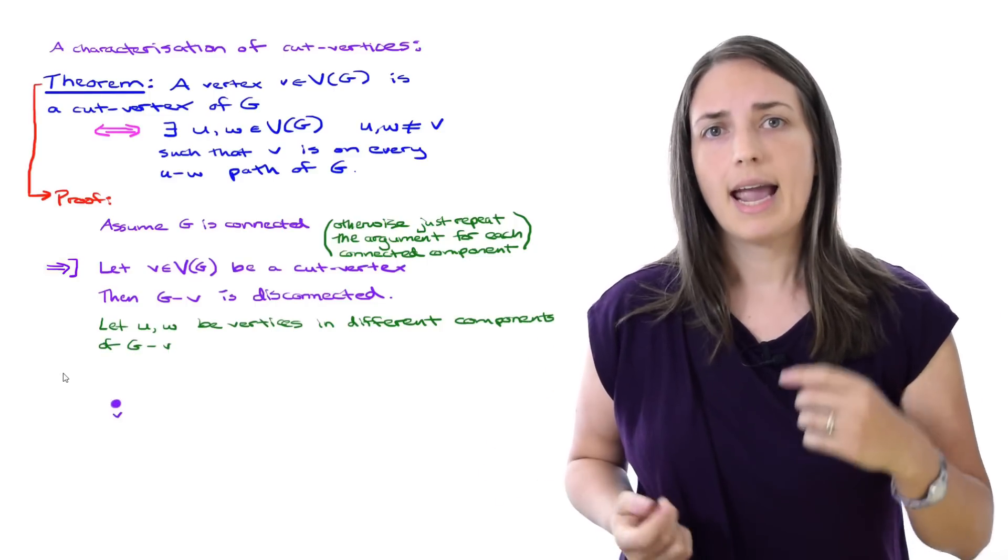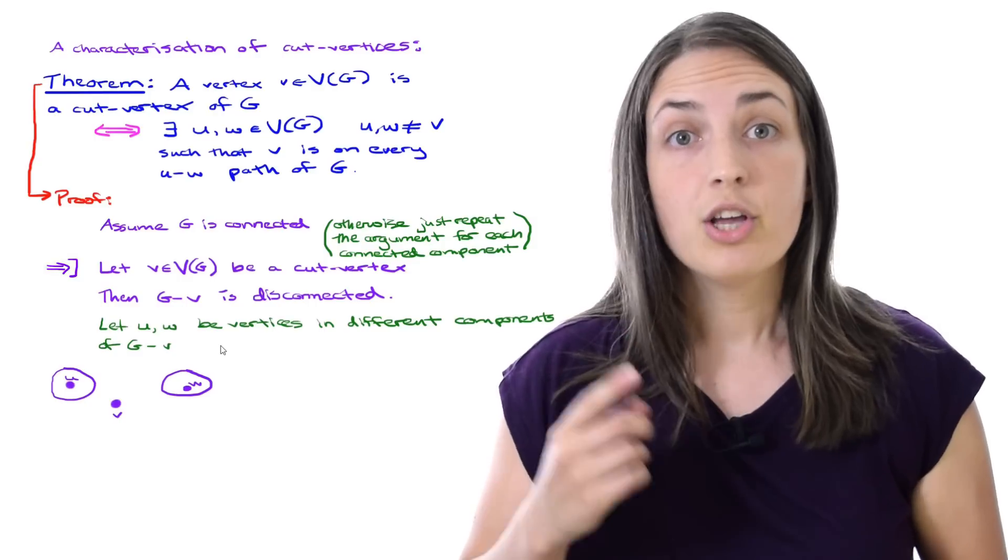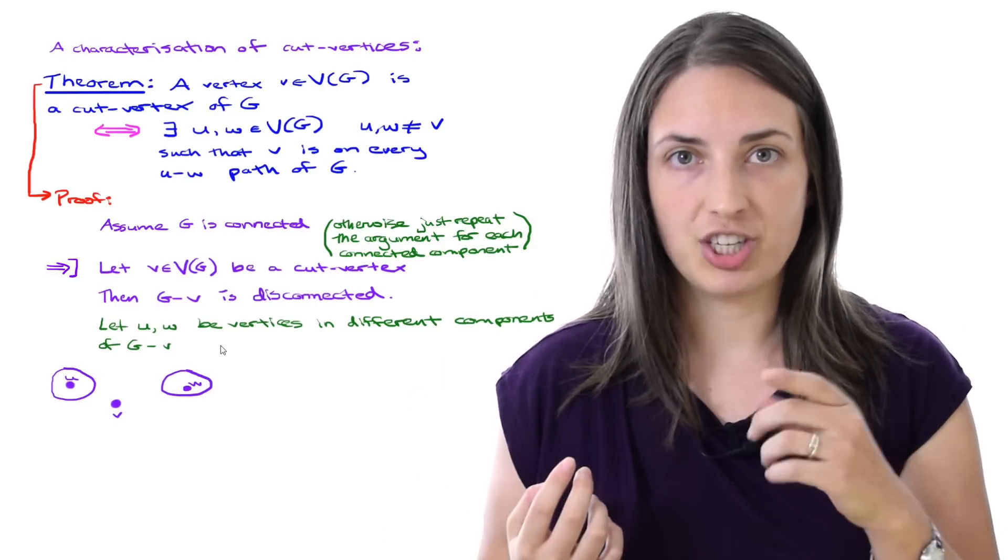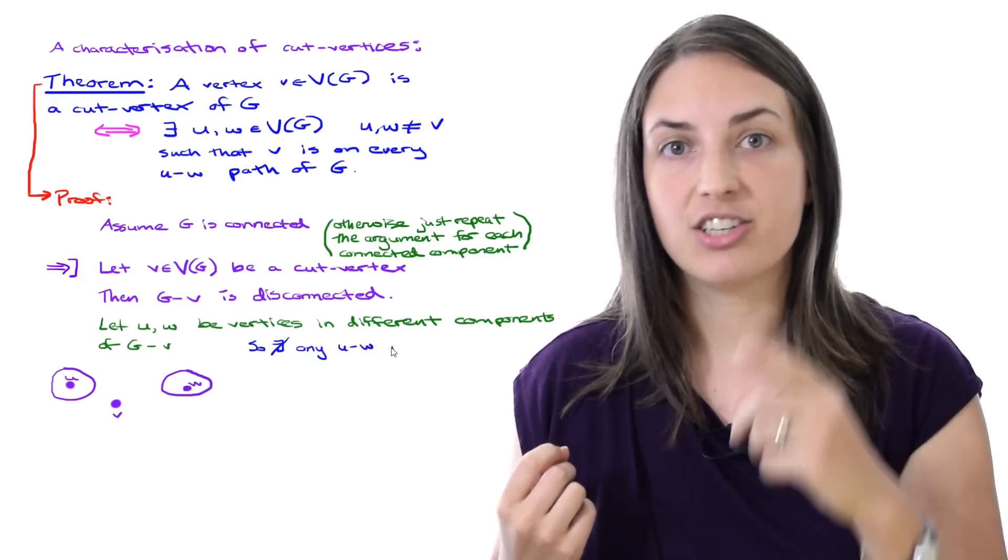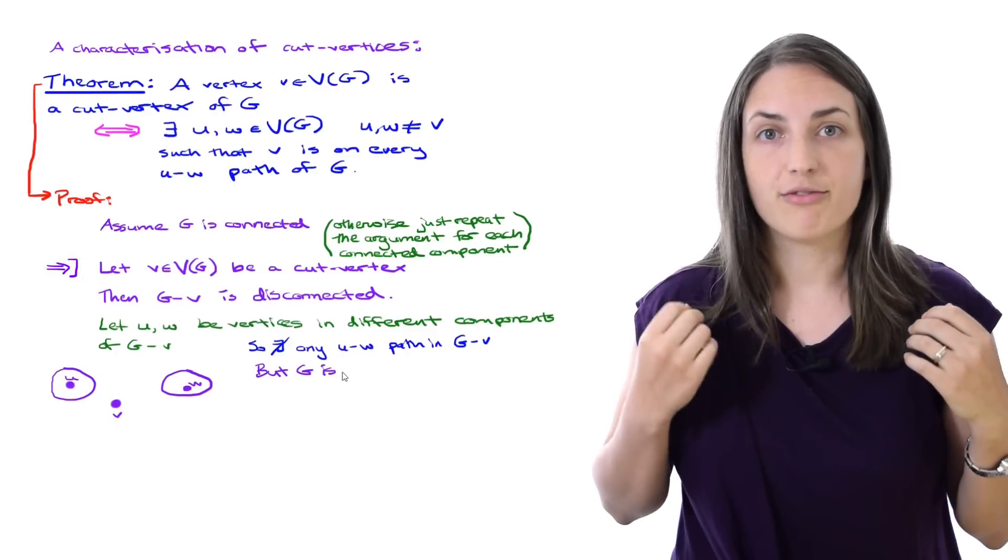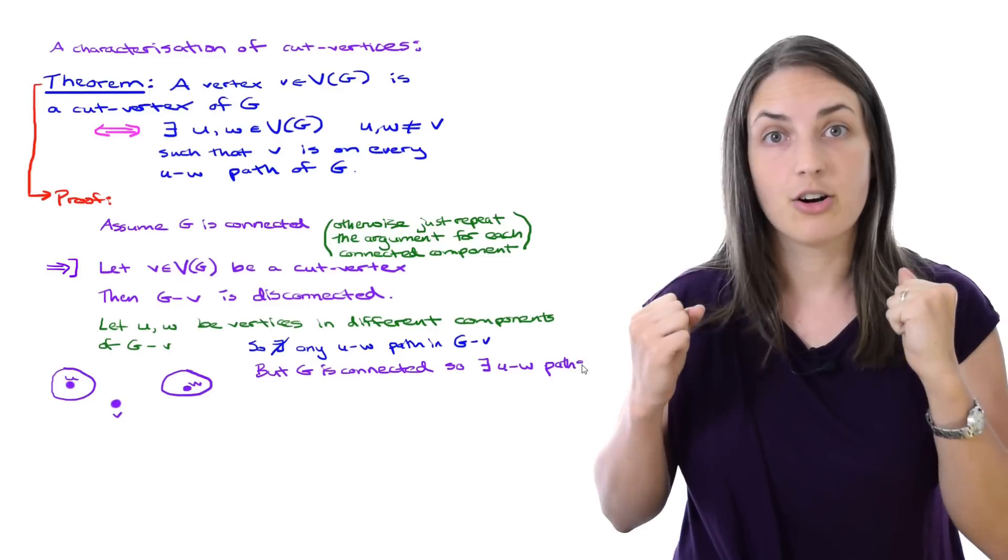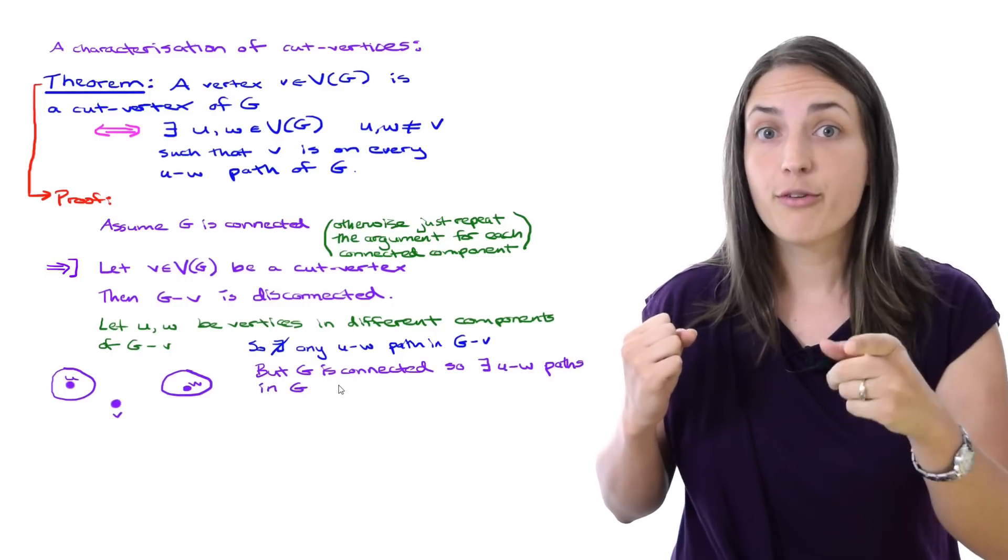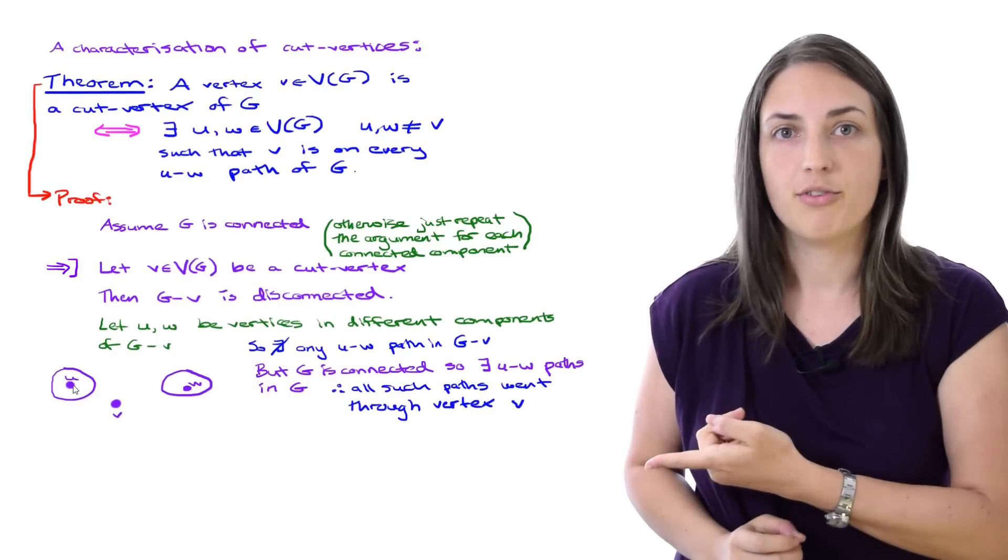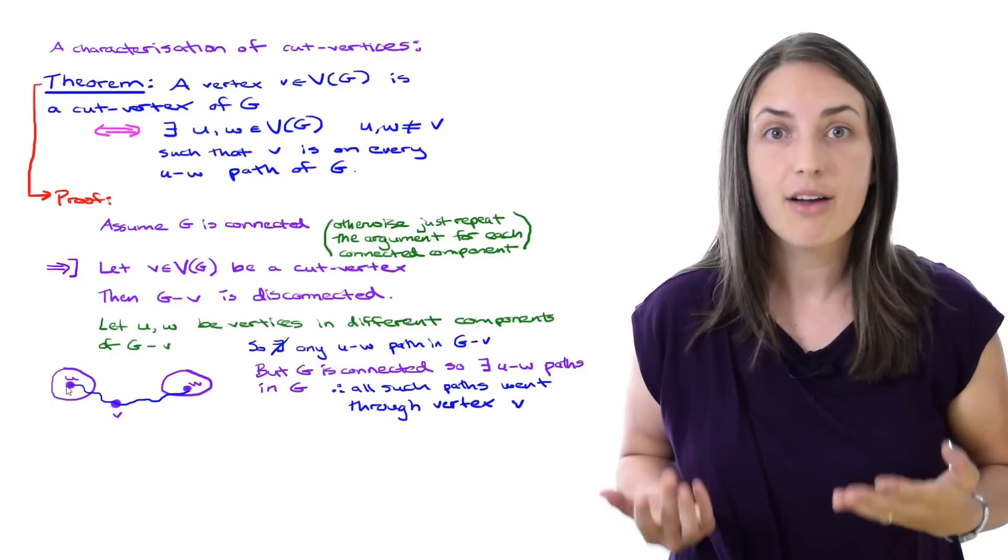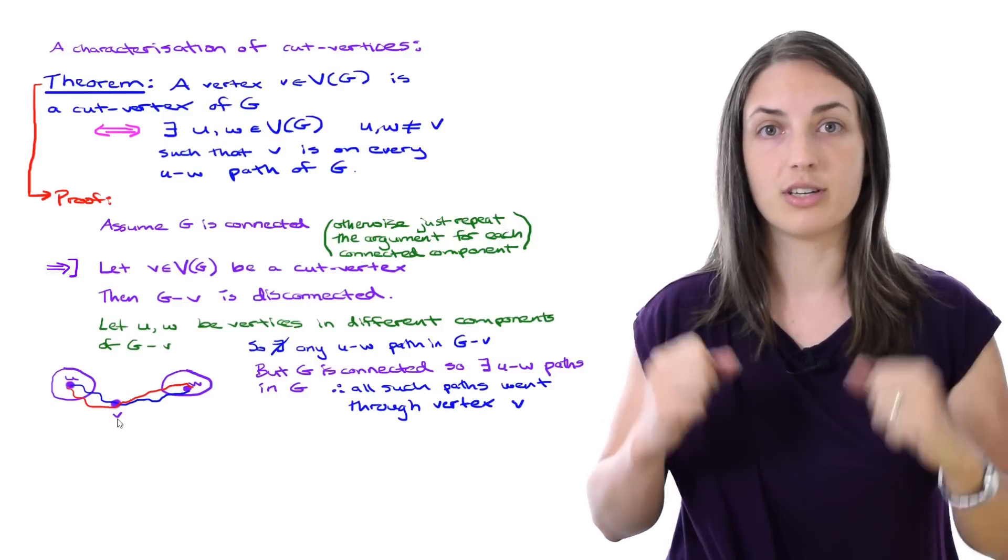Let's start drawing what we know. We have our vertex V and then we have at least two components and we'll put U in one of them and W in the other. Now U and W being in different components of G without V means that there cannot exist any U, W paths in G minus V, but our graph G was connected so there do exist U, W paths in our original graph. Therefore all of those paths must have gone through that vertex that we removed, V. So if you were to draw in any path, they would have to go through vertex V, and that's exactly what we were looking for. We've found two vertices with that property.